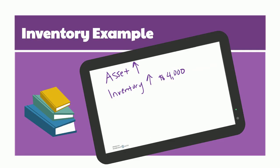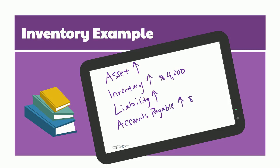You haven't paid for it yet, therefore you owe someone money, so a liability is increasing. Specifically, we would use an account called Accounts Payable, and this is increasing by $4,000. We've addressed everything that's happened with this transaction.